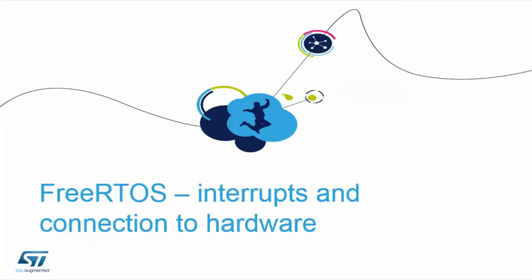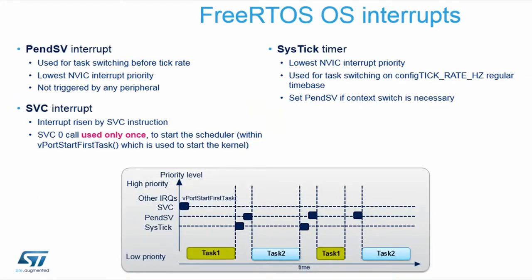Now let's talk about interrupts and their connection to the hardware. The System Service interrupt (SVC) is raised by an SWI instruction and is used only once to start the scheduler at high priority. You can see that the SVC occurs only at the beginning of FreeRTOS execution, and as soon as it is finished it performs the task switch so the first task begins executing.